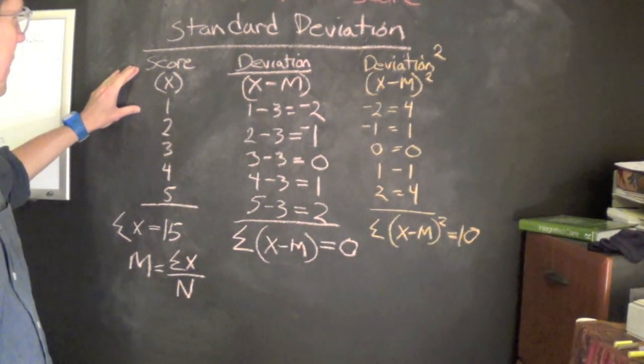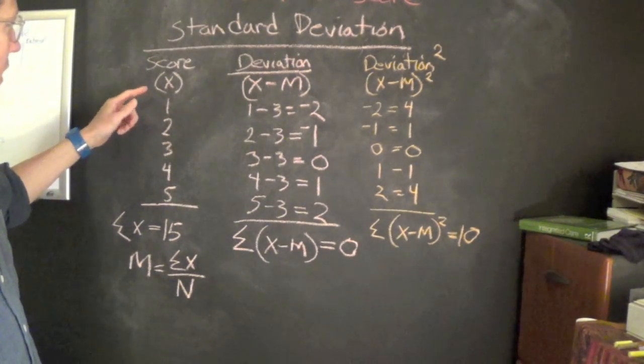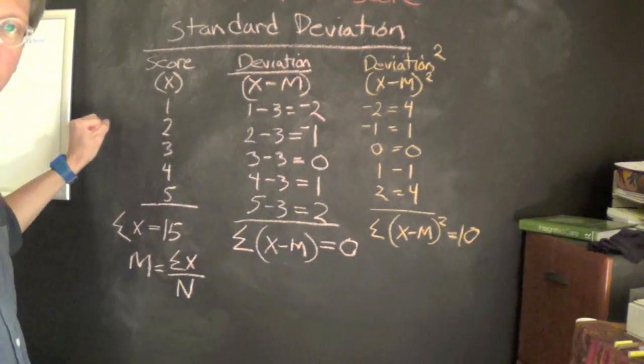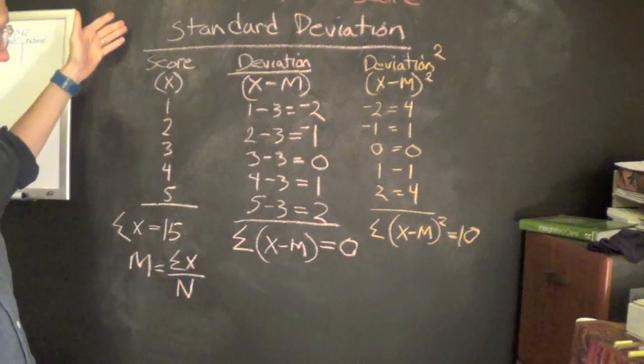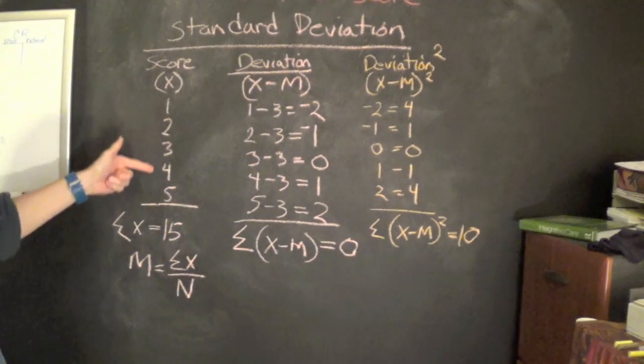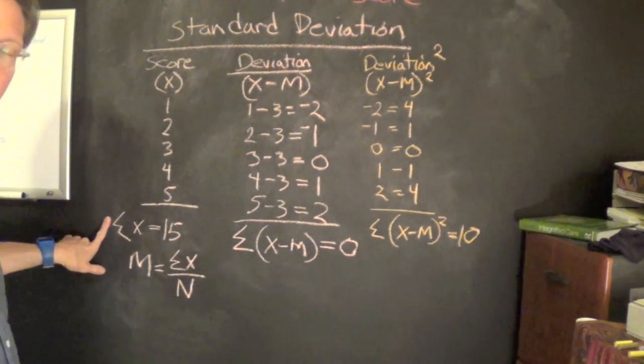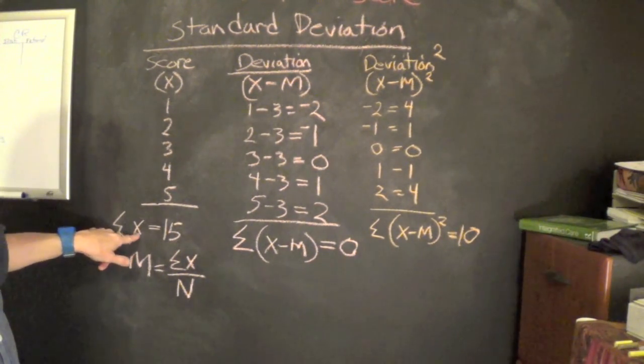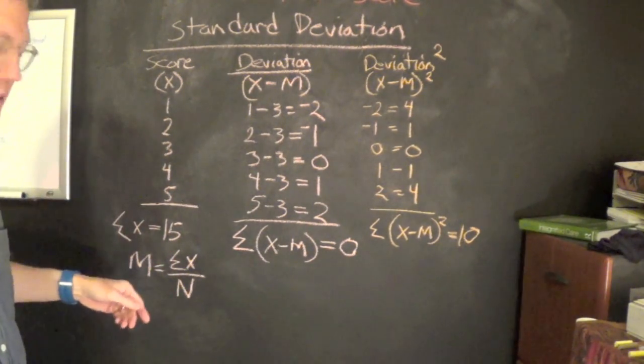To begin with, we've got the scores indicated by X. We're assuming we've got a score of one, two, three, four, and five. So these are actual scores. Essentially five people took this assessment and these were the scores they had. We sum these up and sigma, the Greek symbol sigma, stands for sum. So we're summing the scores, X equals scores. We sum that up and we get 15.